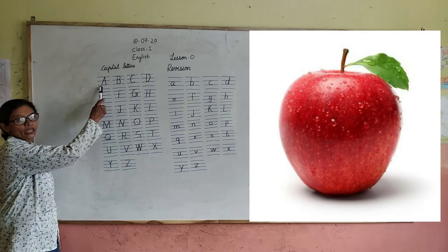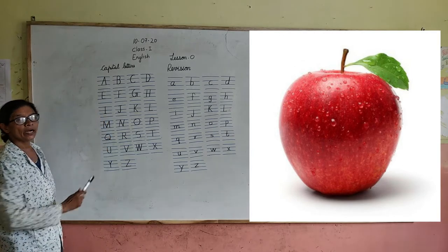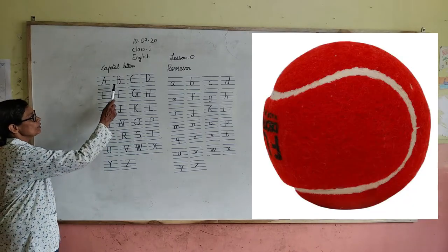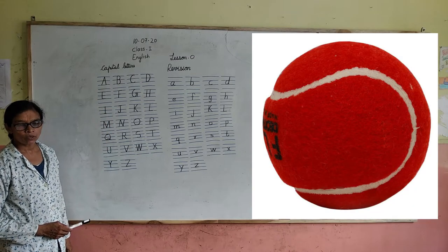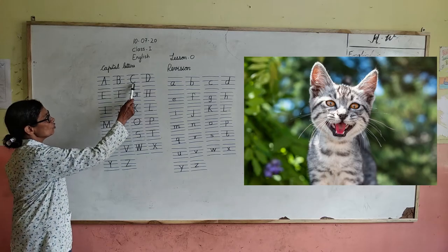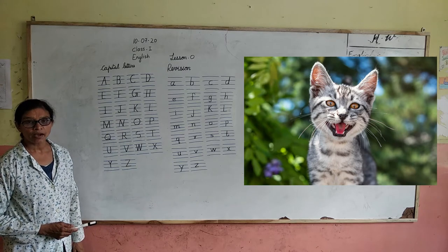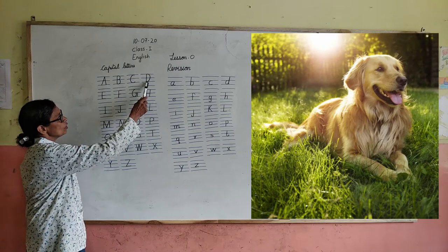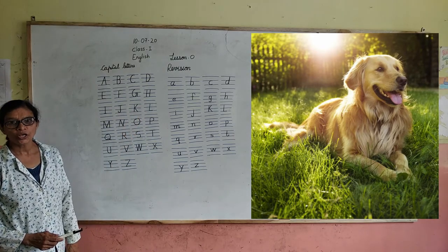A for pad. B for board. D for dog — D-O-G, dog.